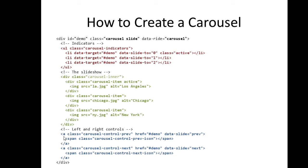After the slideshow we have the left and right controls. The buttons are links using 'carousel-control-previous'. The href is 'demo' — the id — so it should be consistent. Data-slide equals 'previous' for the previous button. A span with the appropriate class gives us the previous icon. Similarly, for the next button we use 'carousel-control-next', data-slide equals 'next', and the span class is 'carousel-control-next-icon'.